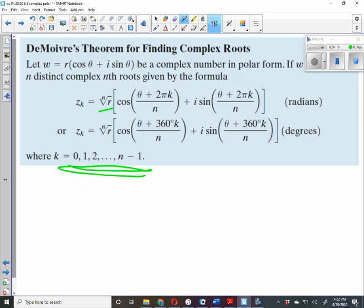So you take the nth root of r, cosine, and you're adding theta plus 2π times k. If k is zero, you're going to multiply by zero. If k is 1, then you multiply by 1. If k is 2, you end up with 4π, and so on. Once you get past this, this is repetitive, and you'll see how that's repetitive. Same thing with 360.